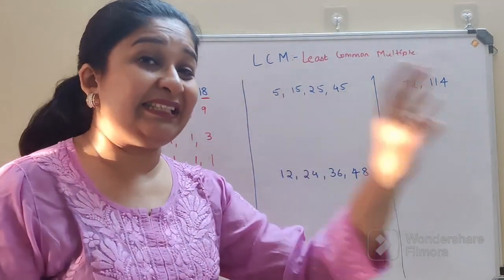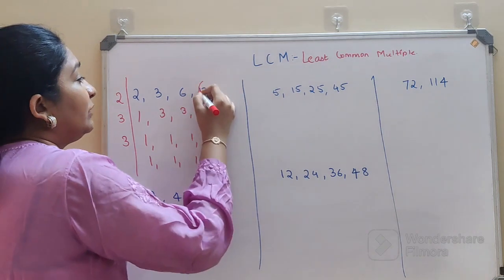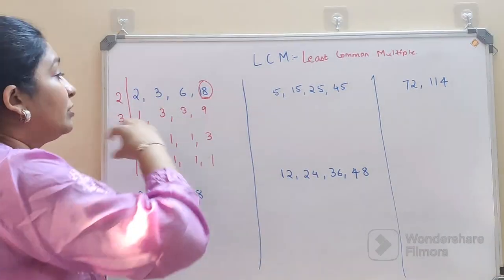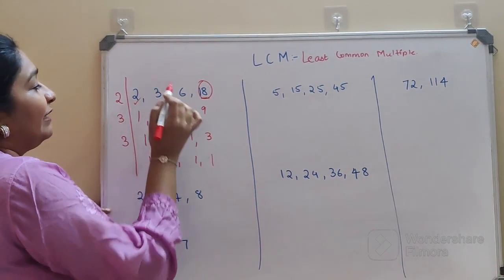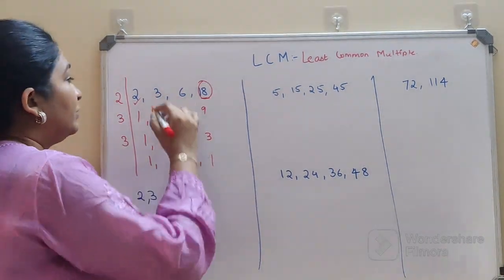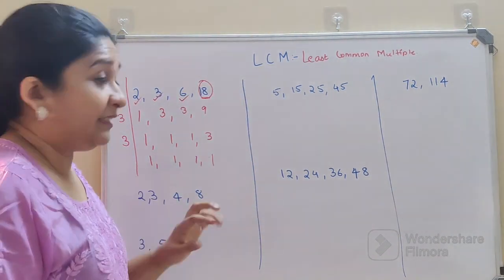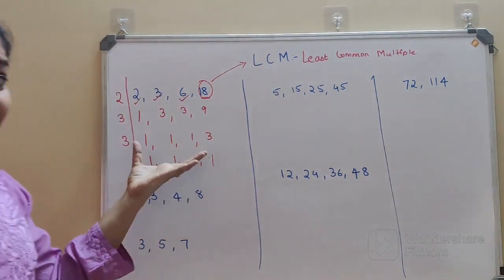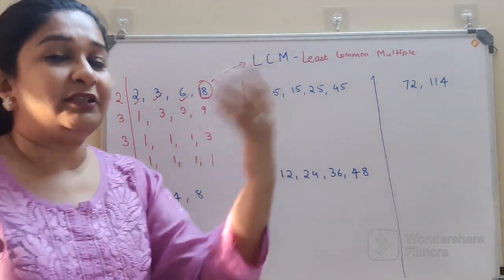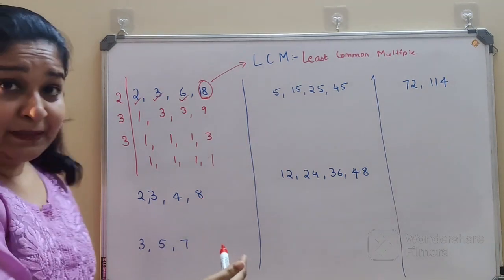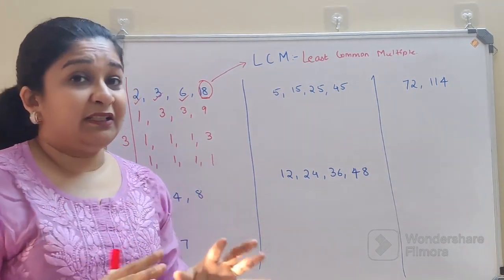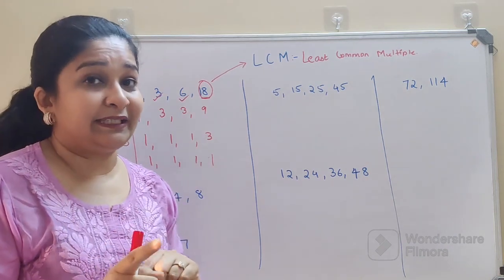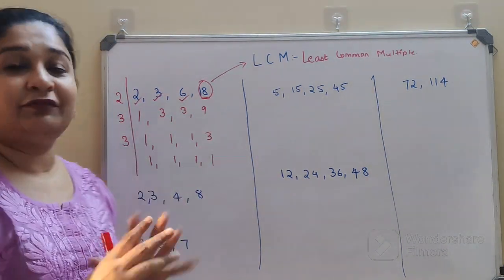If you look closely, 18 was part of your question as well. The trick to find LCM is to just focus on the highest number. Here the highest number is 18. Keep cancelling the numbers in the question which completely divide 18: 2 divides 18, 3 divides 18, 6 divides 18. So 18 is your LCM — no lengthy working needed. In school, show the steps for marks, but also know this trick to cross-verify.